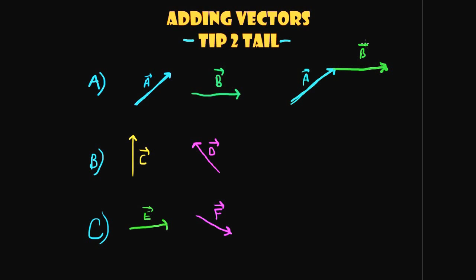When you add numbers like 4 plus 5 you get a result — 9. Similarly, when you add vectors you get a result called the resultant vector. In this case it's drawn from one tail all the way to the other tip. We'll call it vector R, though the label doesn't really matter — it just describes the addition of the two vectors.